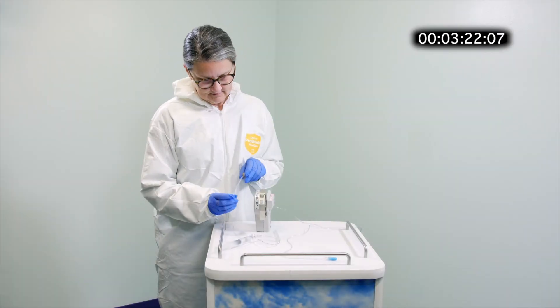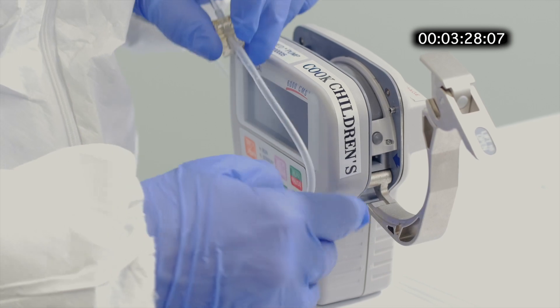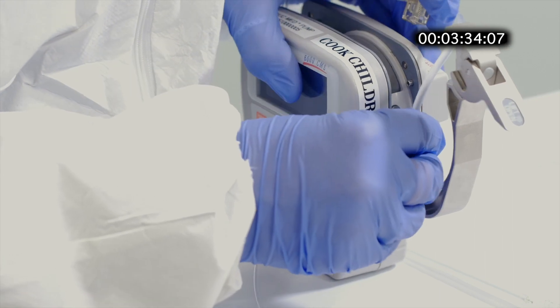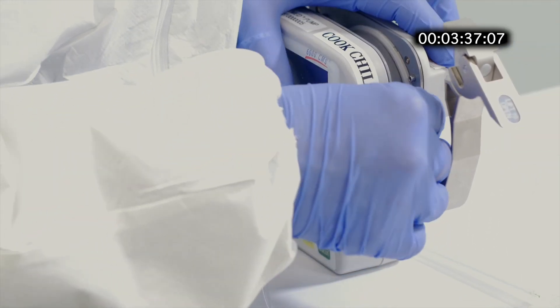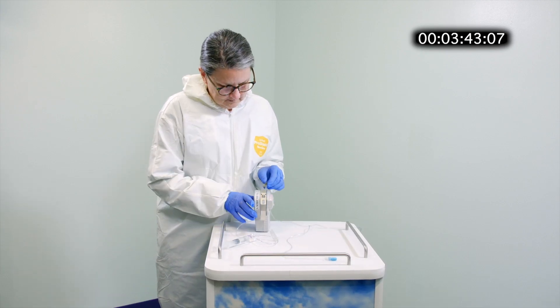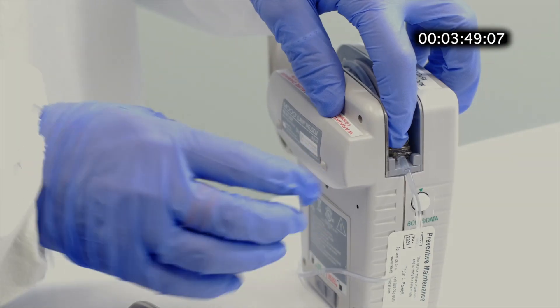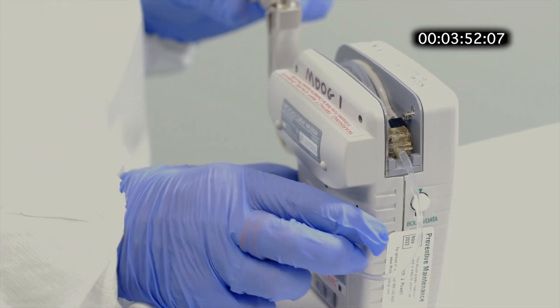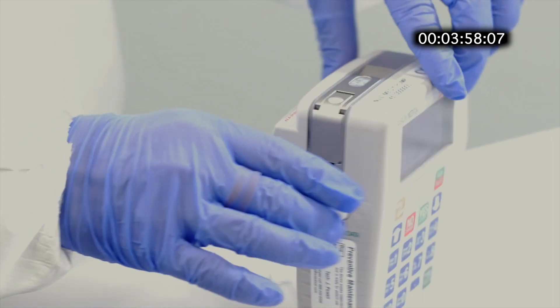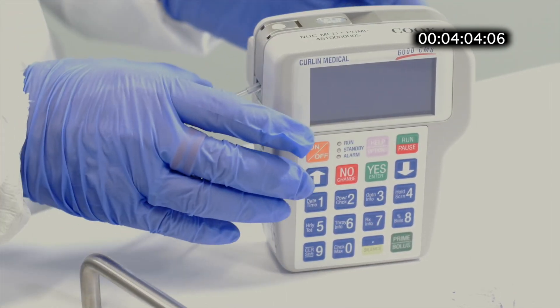Now we are ready to connect the infusion set to the pump. First make sure that the tubing goes through the notch on the clasp, and then align the blue tab with the blue arrow on the pump and press. Next bring the line around and put the yellow tab into the yellow hole and close the clasp. It should close very easily if everything is correct. And then check the back end to make sure that the line has not been pinched with the clasp.